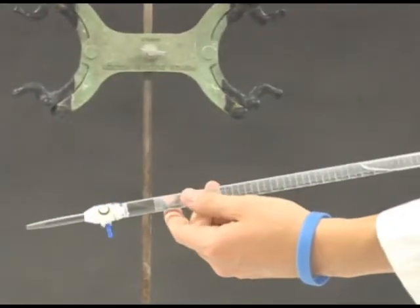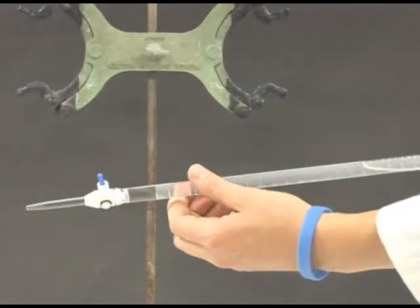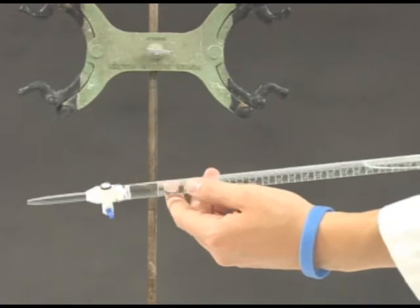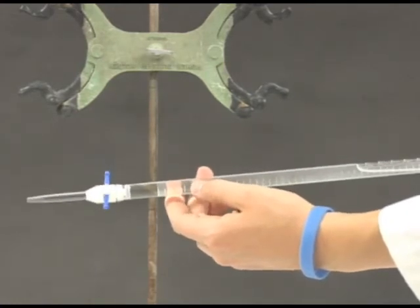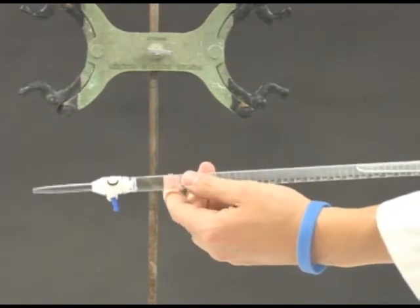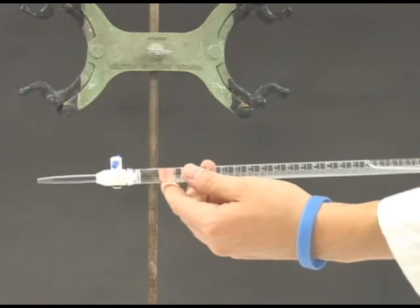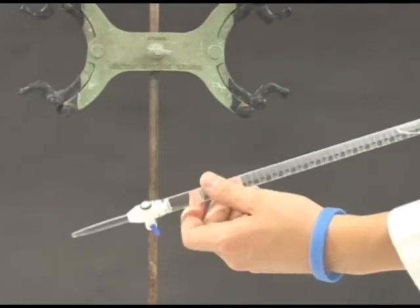Rinse the burett again by adding a few milliliters of solution and rotating the burett to rinse the entire surface and tip. This is done so that the concentration of the solution is not diluted by water.